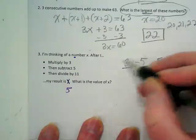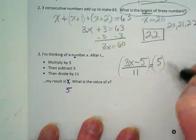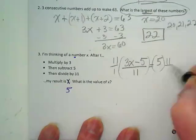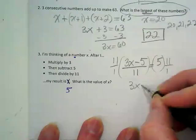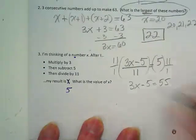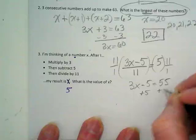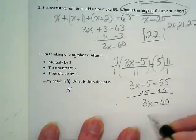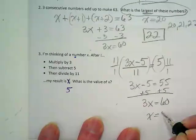I'm going to start off after setting this up with multiplying by the 11 to get rid of the denominator, and I get 3x minus 5 equals 55. I'm going to add 5 to both sides. 3x is equal to 60, which means x equals 20.